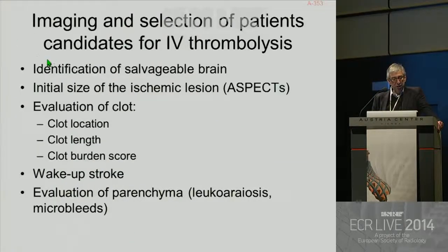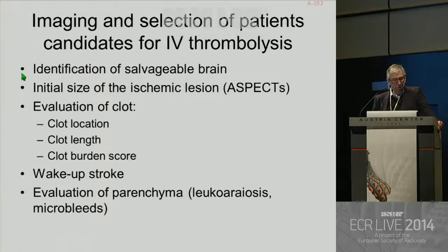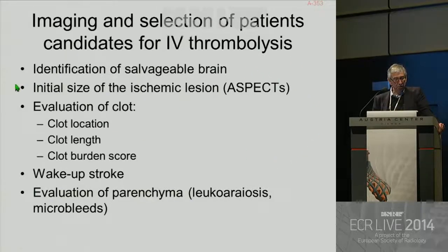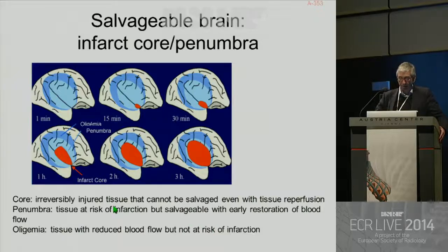Imaging and selection of patients candidates for IV thrombolysis — how can we help with imaging to select the patient for IV thrombolysis? We have to try to identify the salvageable brain. We have to determine the initial size of the ischemic lesions, and we will use for this purpose the ASPECTS score. We have to evaluate the clot: clot location, clot length, clot burden. Also, we will say a word regarding wake-up stroke and evaluation of parenchyma.